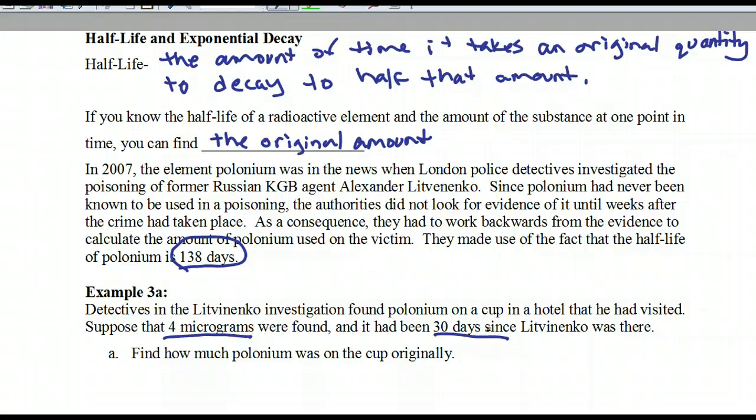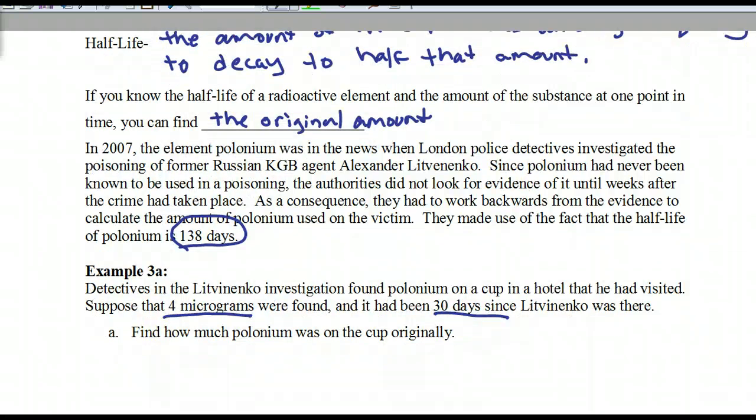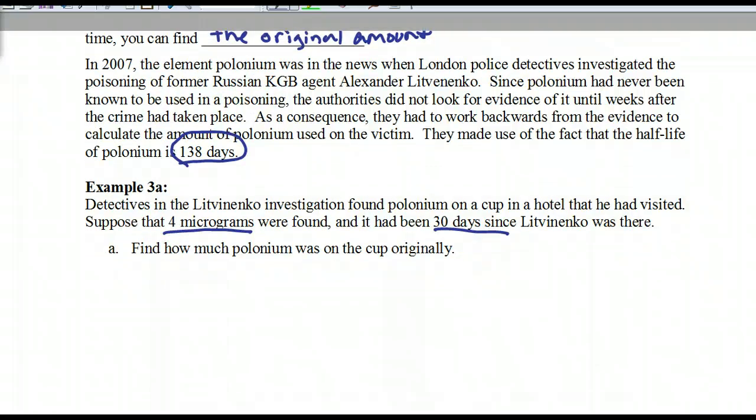So, the first part says, detectives in the investigation found polonium in a cup in a hotel that he had visited. Suppose four micrograms were found, and it had been 30 days since he was there. How much was in the cup originally? So, remember A in our, it's a radioactive element. So, remember that A is our original amount when we're looking at an exponential. So, we're looking at what the half-life, so one half of A, is at 138 days. So, first of all, we've got to find out what B is. And we know that the half-life is 138 days. So, first of all, I'm going to divide both sides by A. Those cancel out.